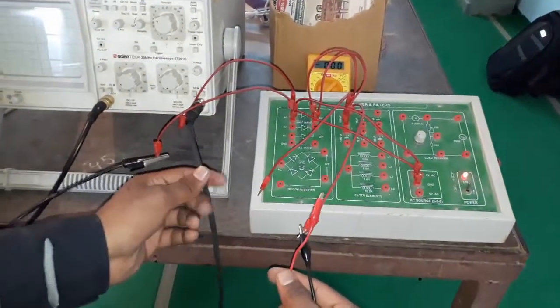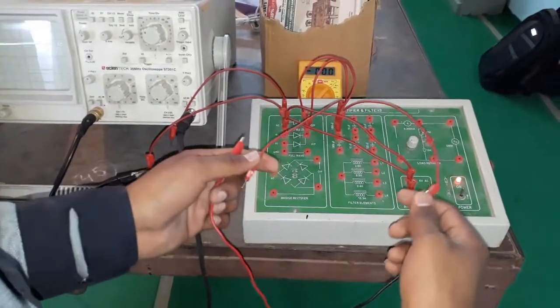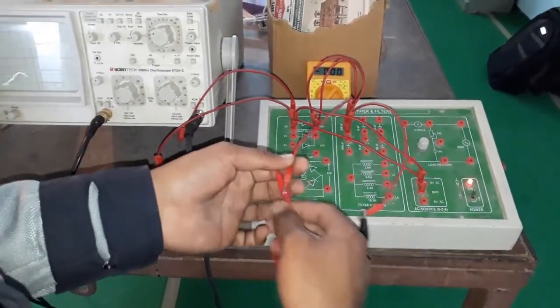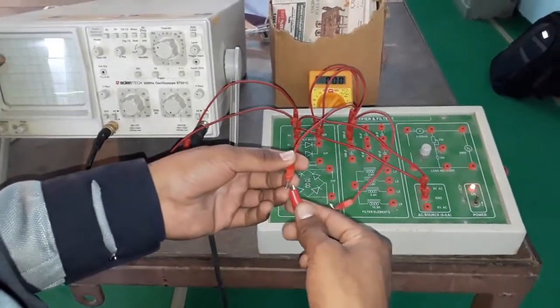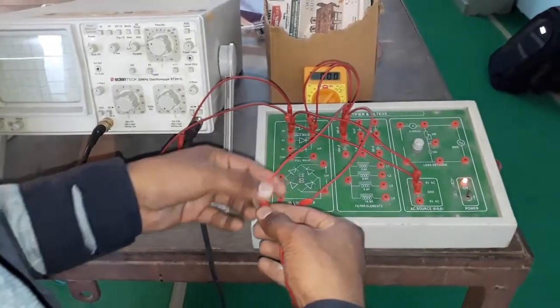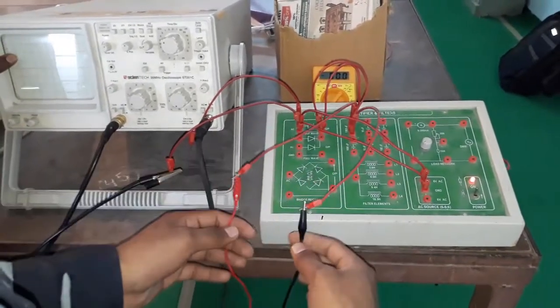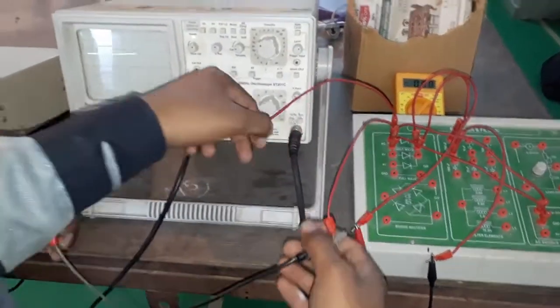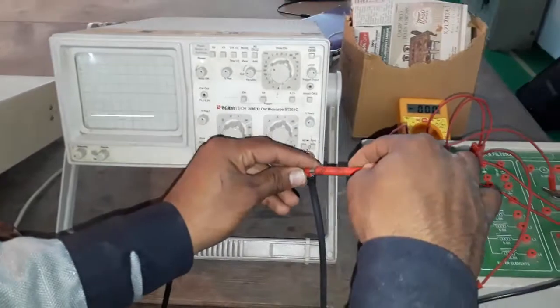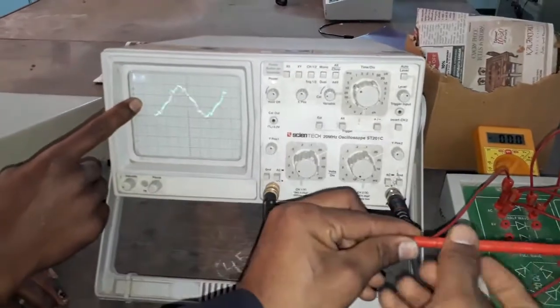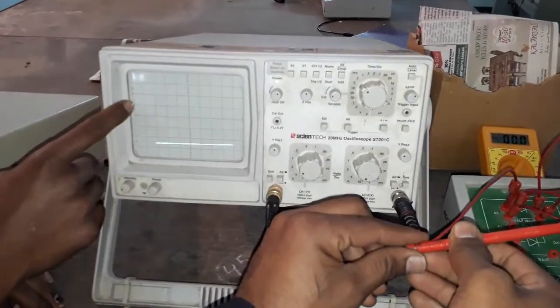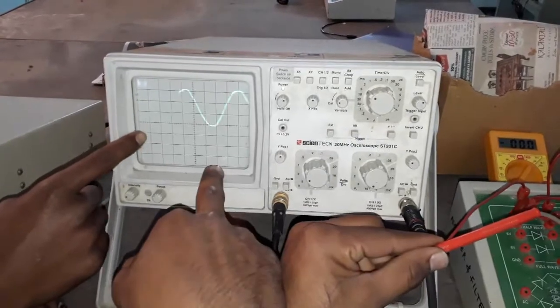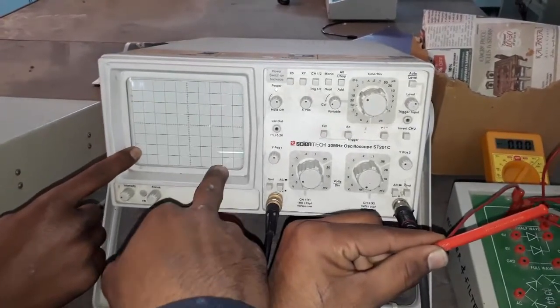Now I have connected my first channel to this filter and we can look at this in first channel - what is the ripple factor, what we have got. I have connected first channel and now I am connecting the second channel. By this second channel we can see the AC source. The first wave is the AC source and the second wave is neglecting the ripple factor, the second wave is the DC source.